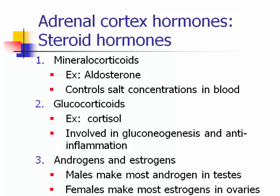The third type from the adrenal cortex is androgens and estrogens. Both men and women have these made in the adrenal cortex. Men make far more androgens — like testosterone — in their testes, and women make most of their estrogens in their ovaries. One androgen is testosterone; one estrogen is estradiol.